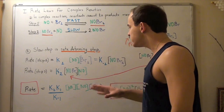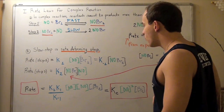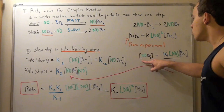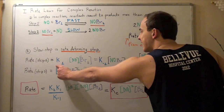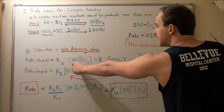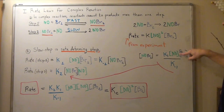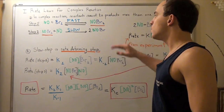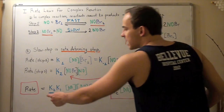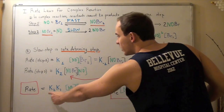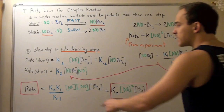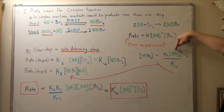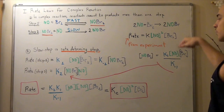We can represent the concentration of NOBr2 in terms of the other species. Rearranging the equilibrium expression gives us: [NOBr2] equals K1 divided by K-1, times [NO] times [Br2]. We plug this into our rate law for step two: rate equals K2 times (K1/K-1) times [NO] times [Br2] times [NO]. This gives us two NO concentration terms — one from the second step and one from the first step — times [Br2] from the first step.